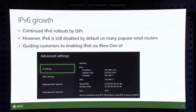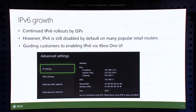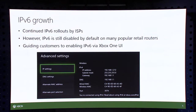What's been driving IPv6 adoption is more ISPs continually rolling out IPv6 support across their networks. However, a challenge preventing further growth is that many popular retail routers are still shipped with IPv6 disabled by default. We made a change within the Xbox UI about a year ago to help nudge customers into checking whether IPv6 is enabled on their network, with a screenshot in the network settings informing a customer if they're connected with just IPv4 or dual stack.